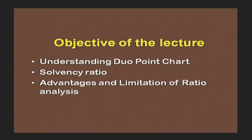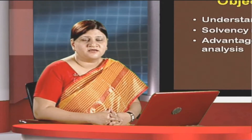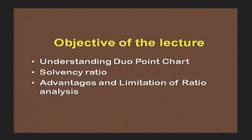The objective of this lecture is to analyze and understand one very fundamental concept: the DuPont chart, by which we ascertain the return on capital employed. The DuPont chart is the basic premise by which we can ascertain return on capital or return on net worth. We will also learn about solvency ratios — how they are determined, what they indicate, and where they are useful — and finally appreciate the advantages and disadvantages of using ratio analysis as a tool of financial planning.